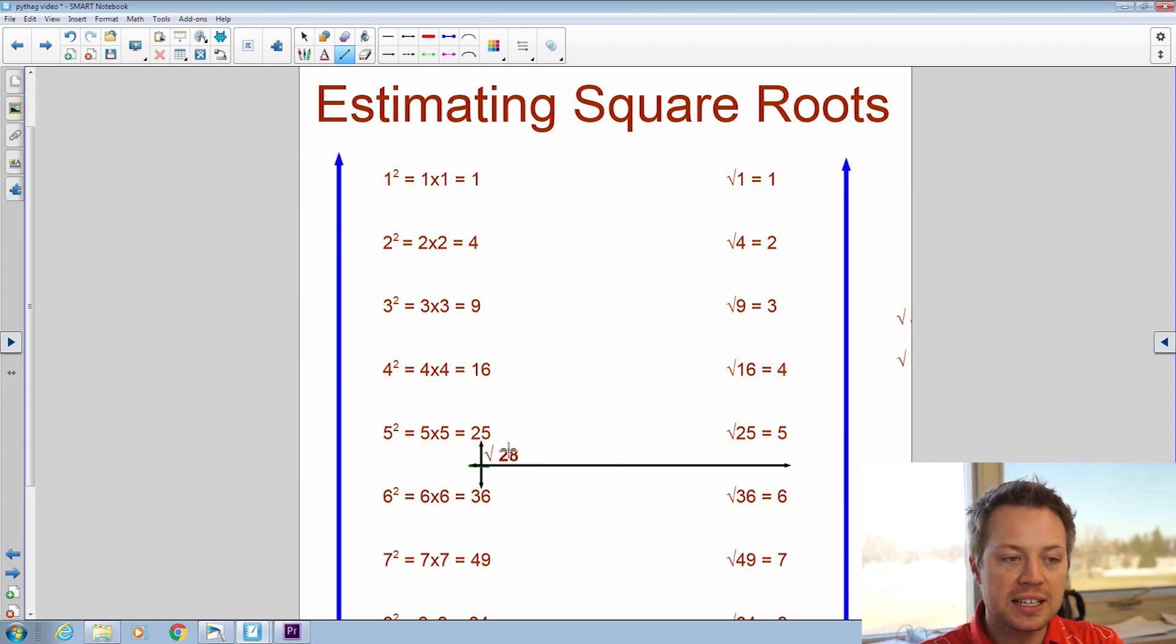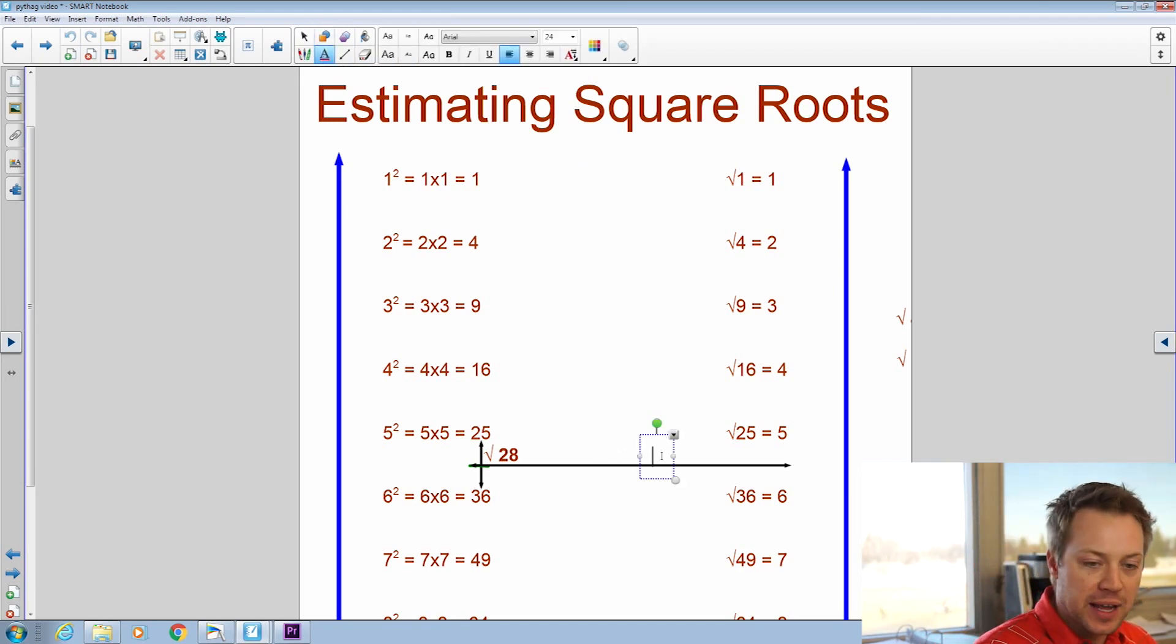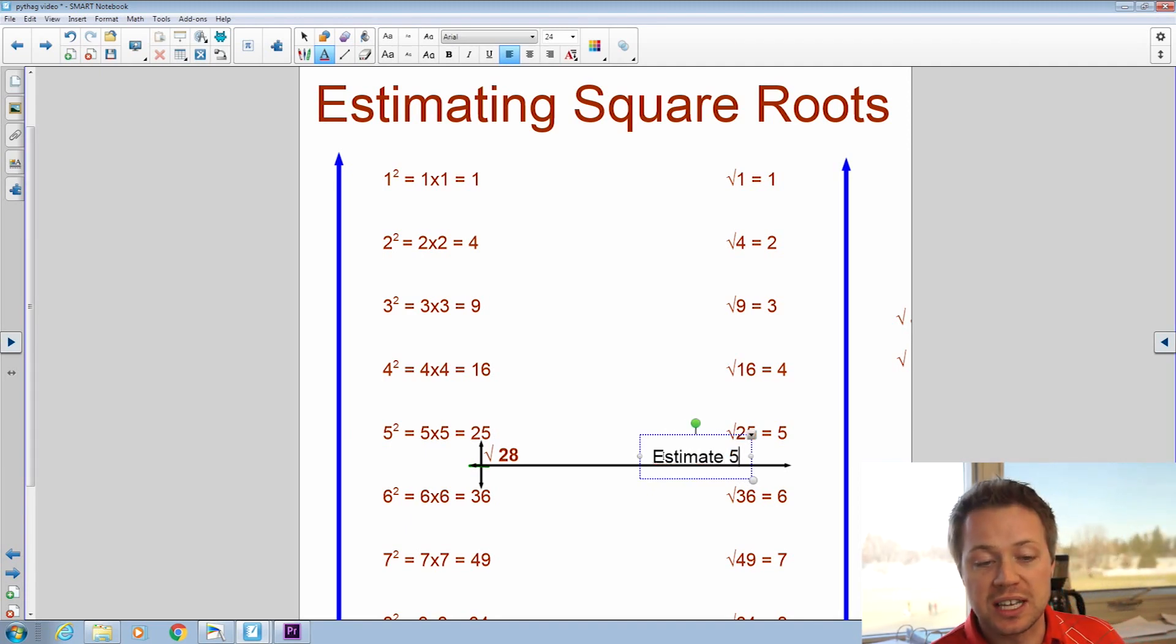However, in this case, 28 is just a little bit closer to 25. So when we estimate a square root, I might say that I estimate my square root as maybe 5.3, because that's just a little bit smaller than 5.5, which is the halfway mark.